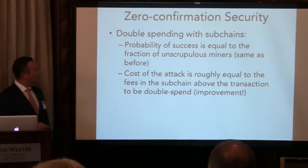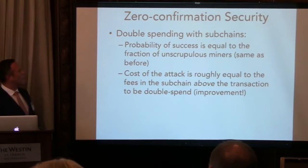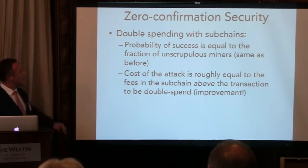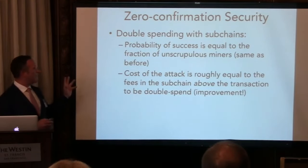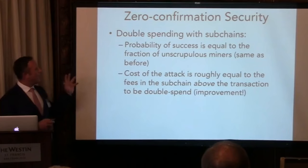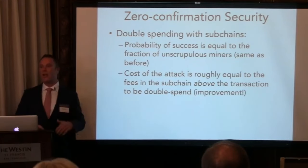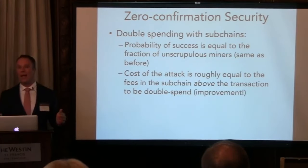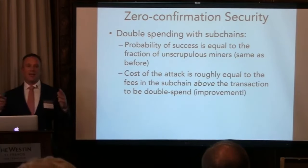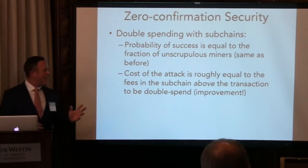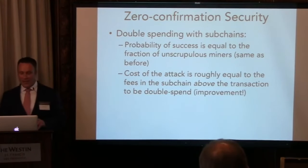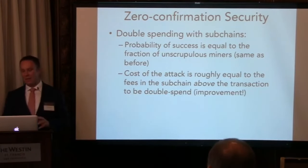To summarize: the probability of success for the scammer is still equal to the fraction of unscrupulous miners, the same as zero-confirmation today. But now the cost of the attack, instead of being zero, is roughly equal to the fees accumulated in the subchain up to where the transaction is buried.